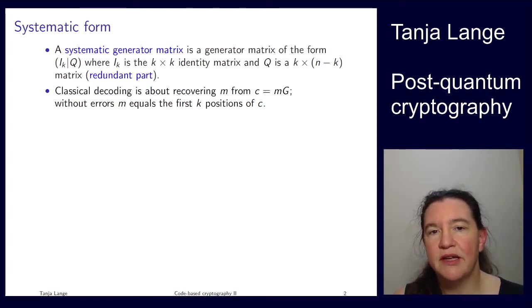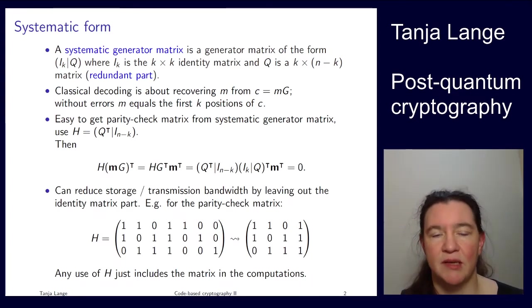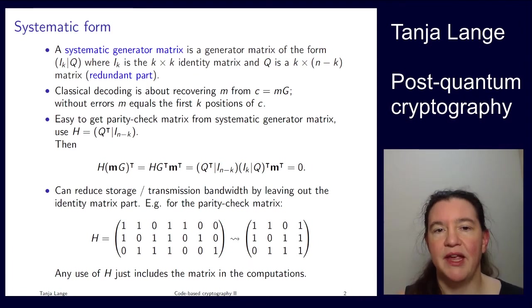Another thing where the systematic form is nice for is to relate the generator matrix and the parity check matrix of the code. So if you are given one, how can you compute the other? So if you have it in systematic form, then this expression there, so taking the Q, transposing it and putting the identity, now n minus k identity matrix after it, that I postulate is a parity check matrix for the same code. Easy enough. But is it true? Well, to prove that it is true, we have to show that every codeword, so everything that is generated as m times g, is actually going to give 0 when multiplied by this H.